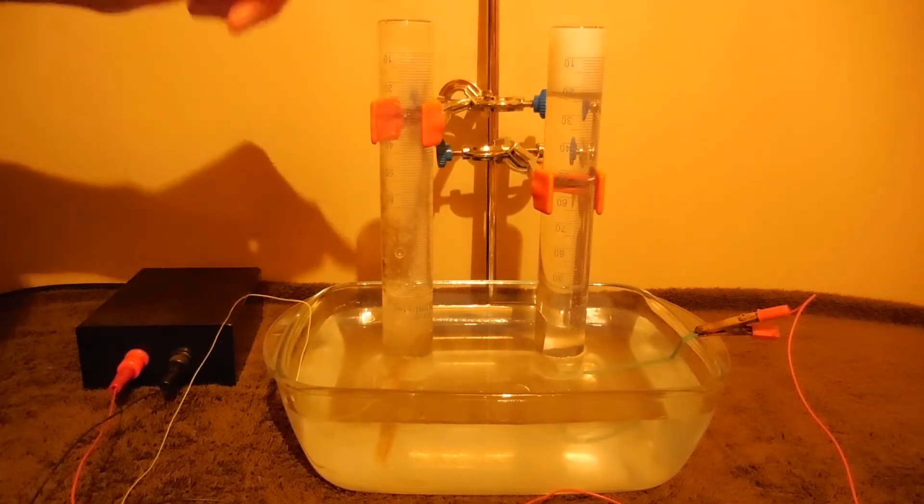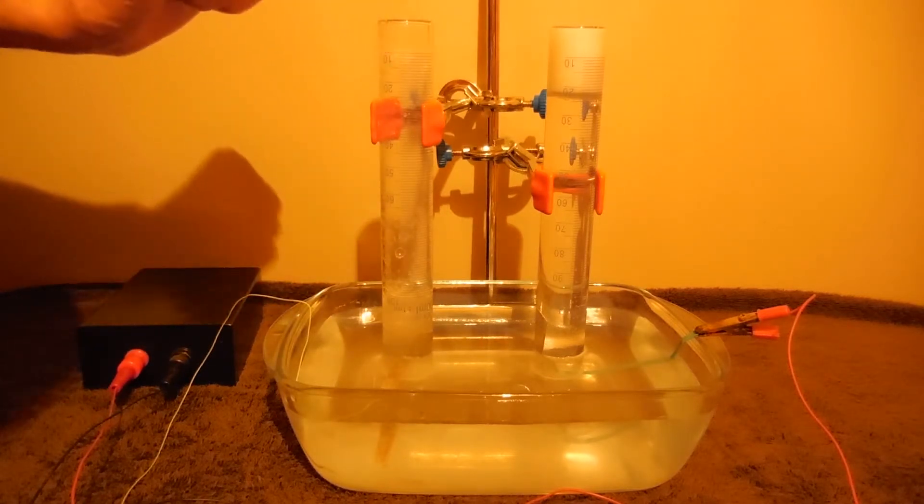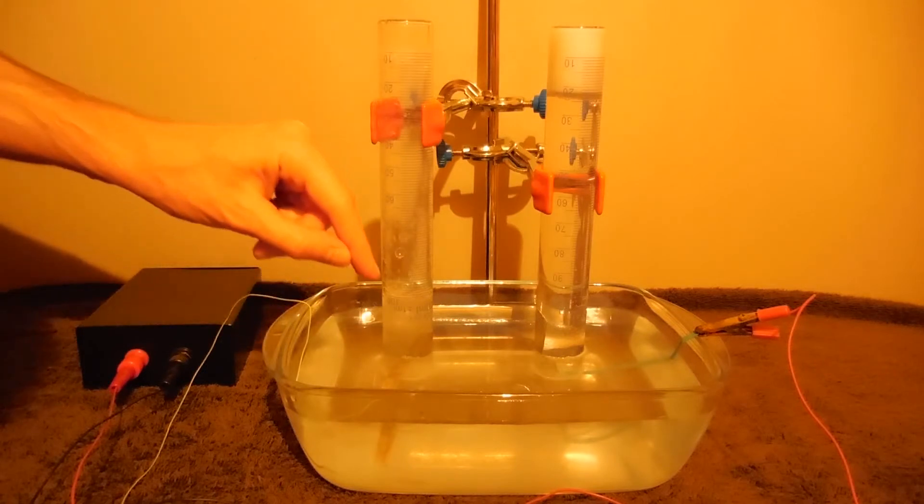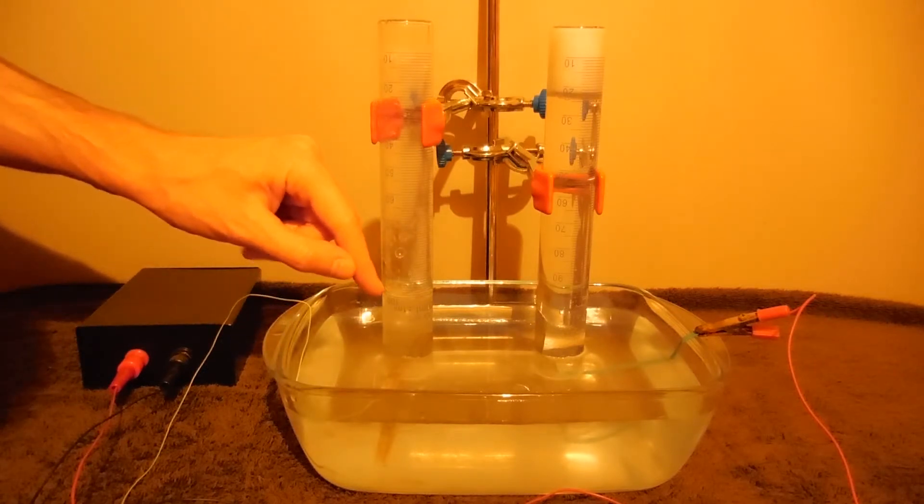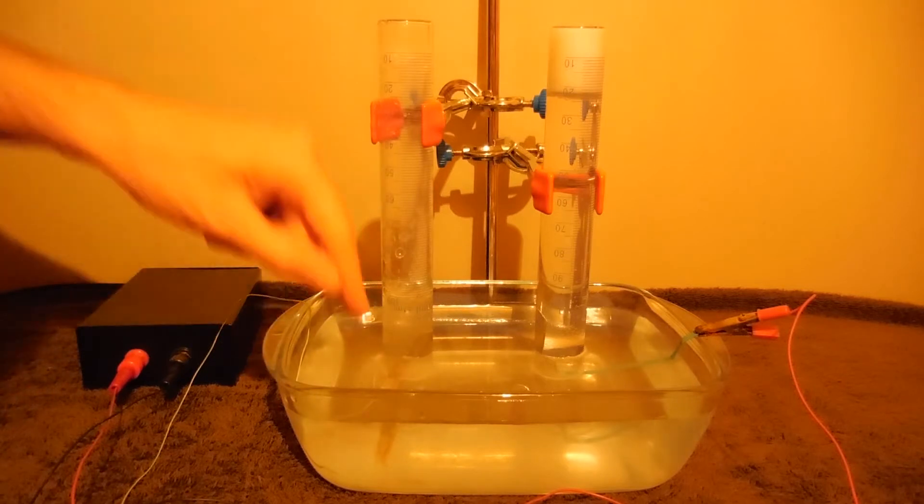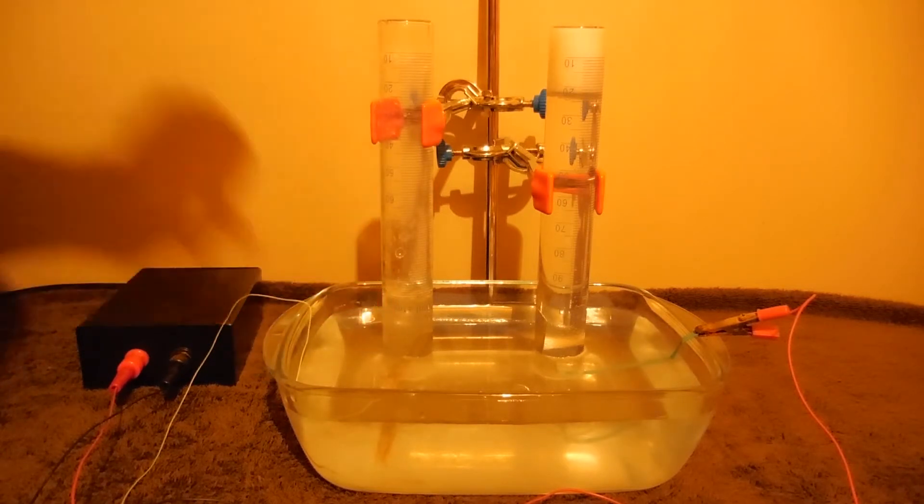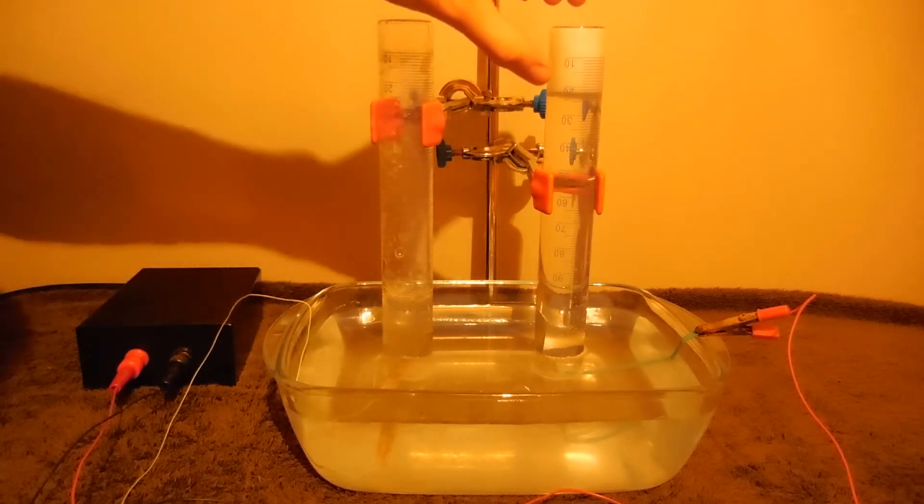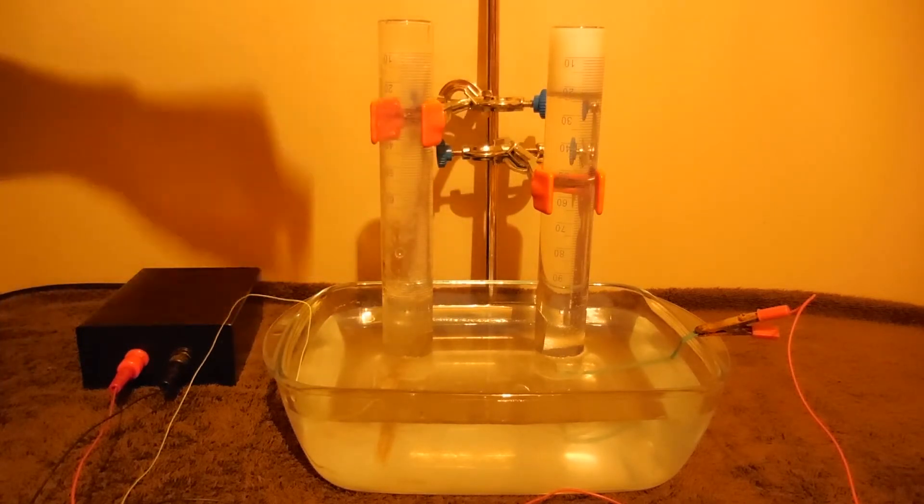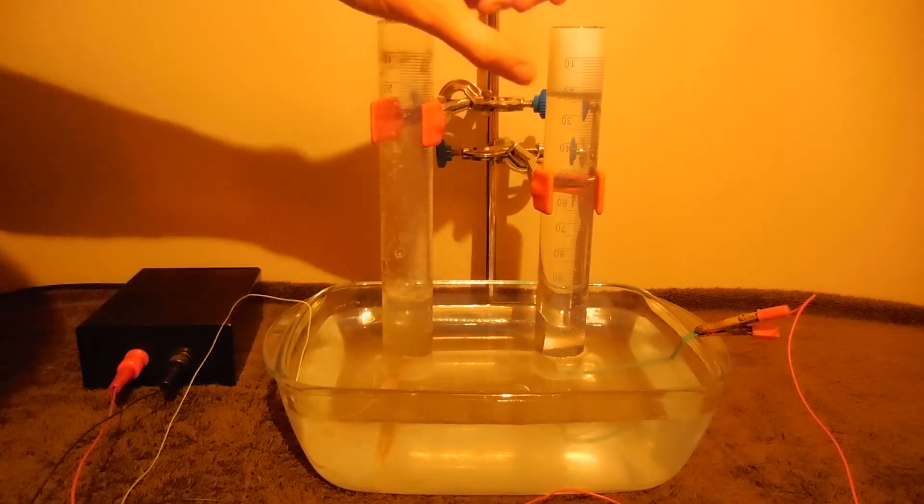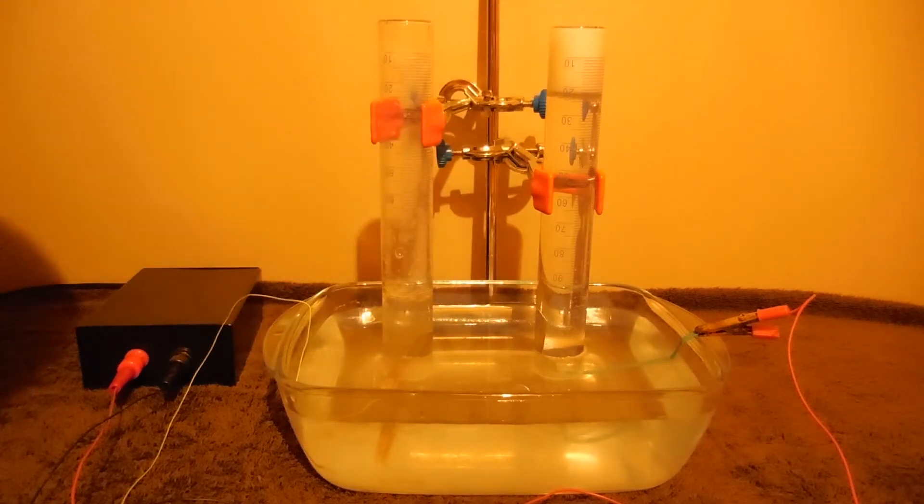After one hour, 57 minutes, we can see volume of hydrogen gas is 100 ml from negative graphite electrode. And volume of oxygen from positive aluminum electrode, there is 21-22 ml.